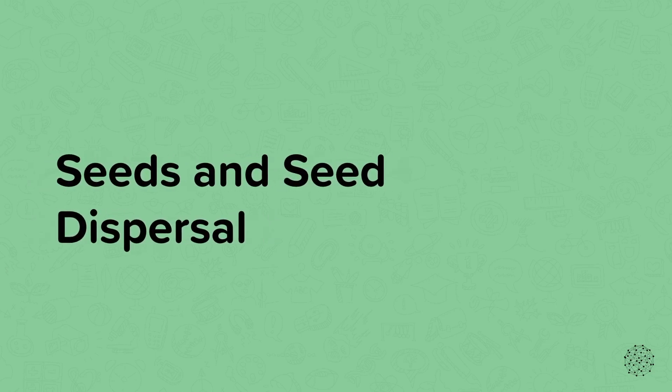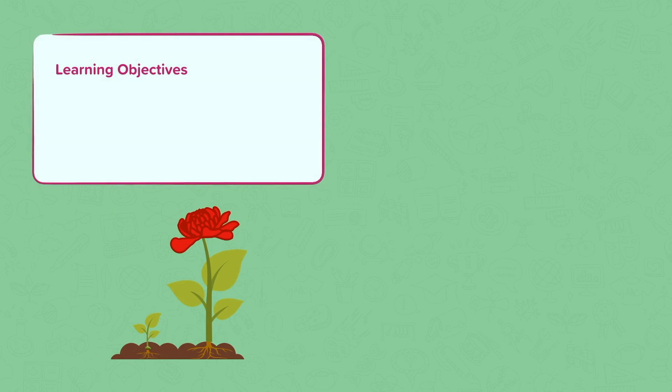This nugget is about seeds and seed dispersal. In this nugget, we are going to describe how plants grow after fertilisation and explain why seeds are dispersed.